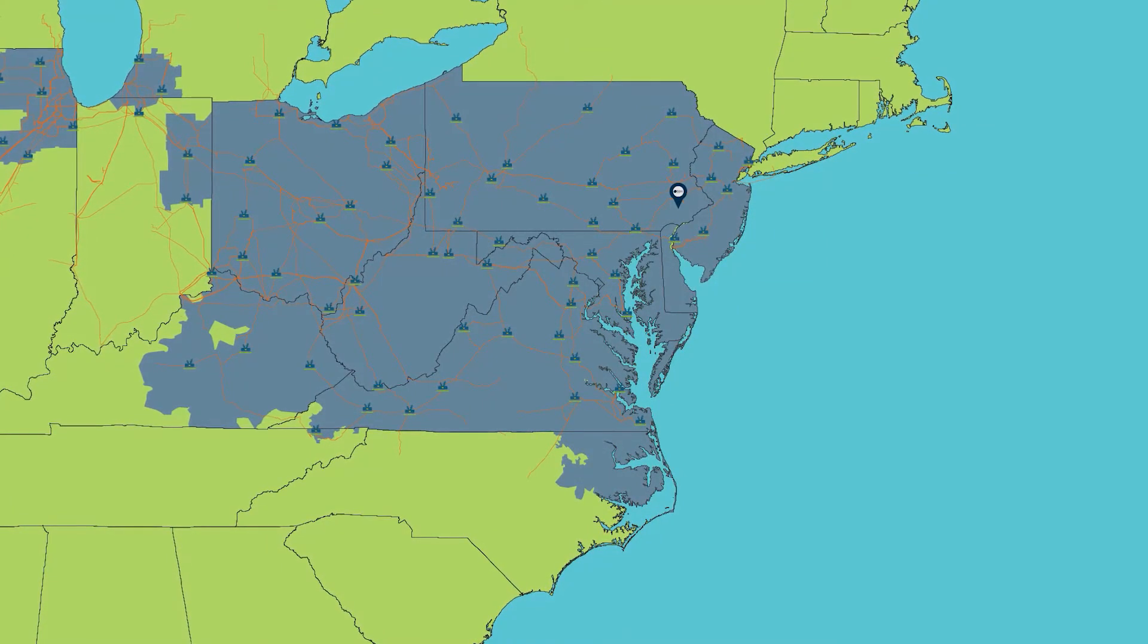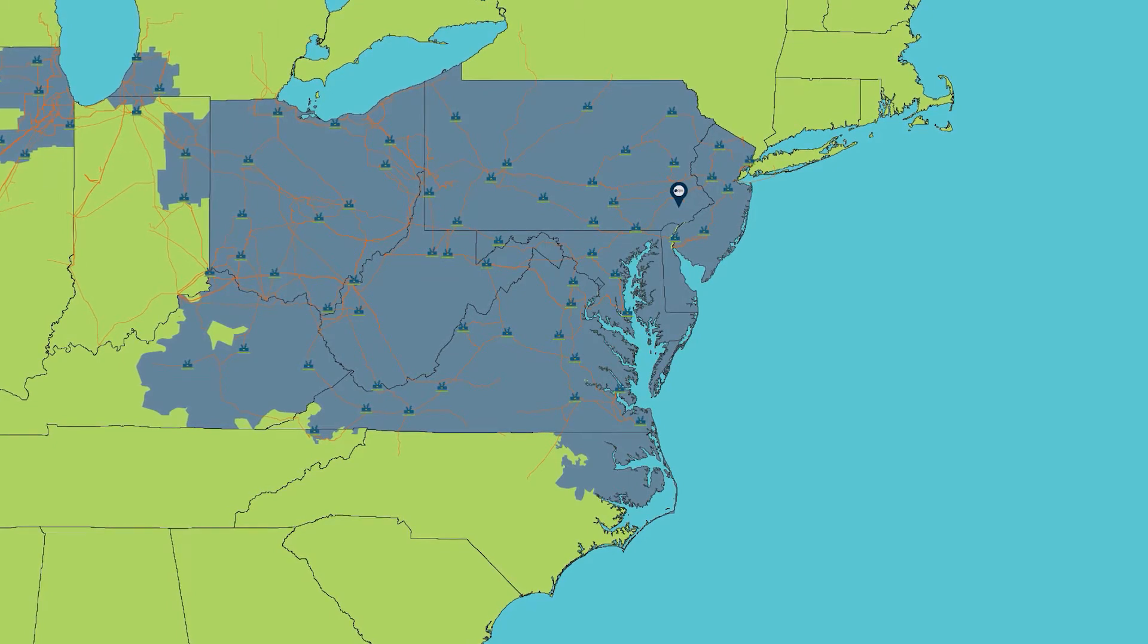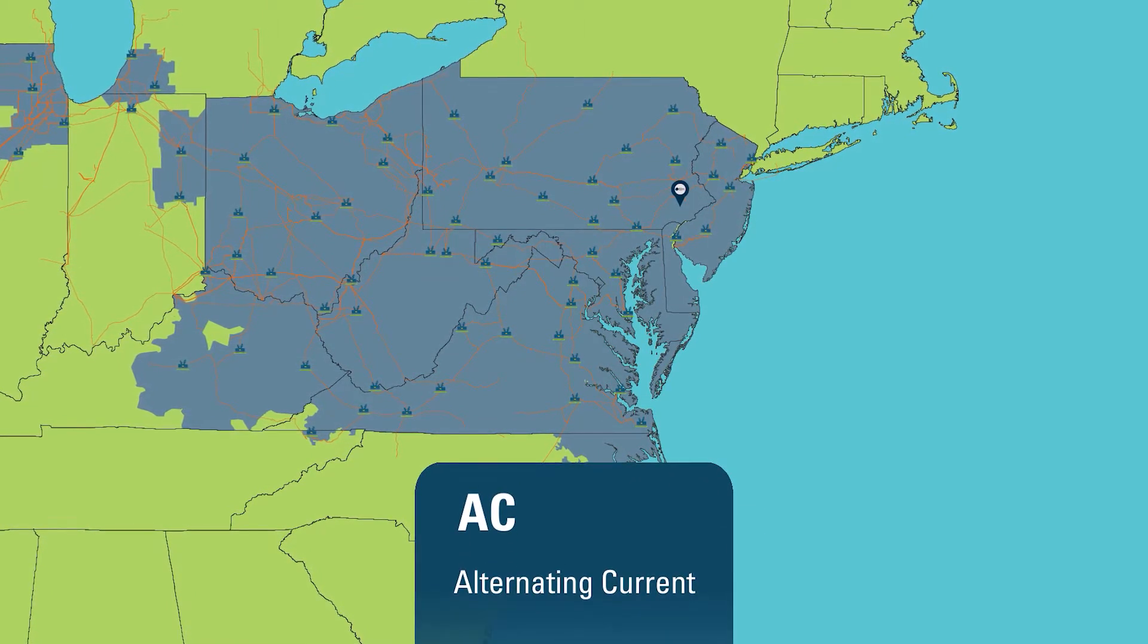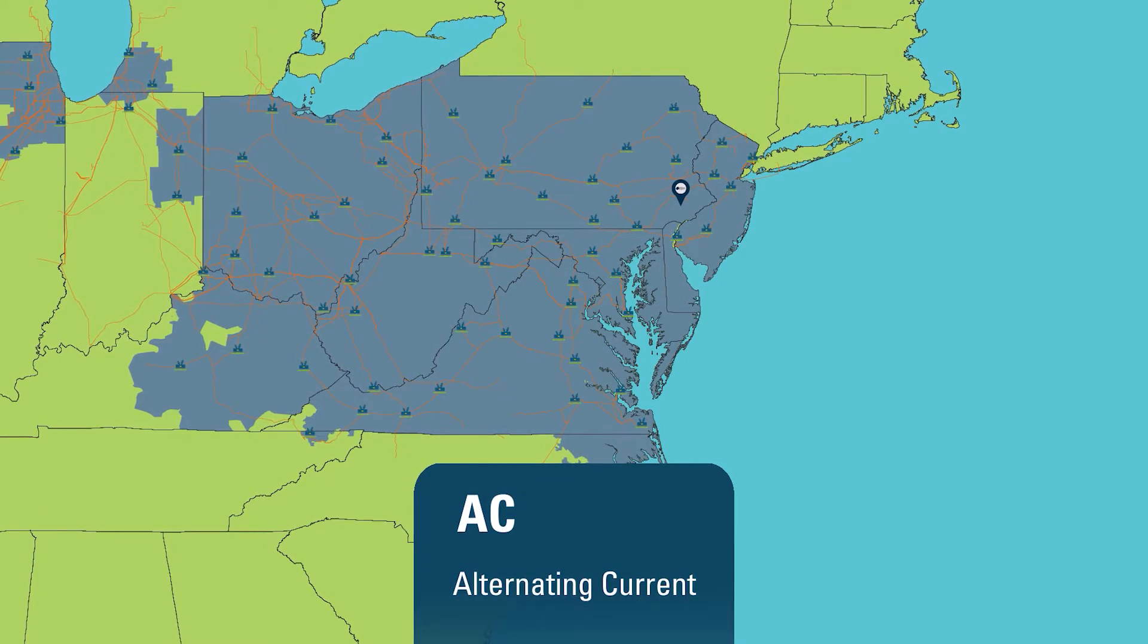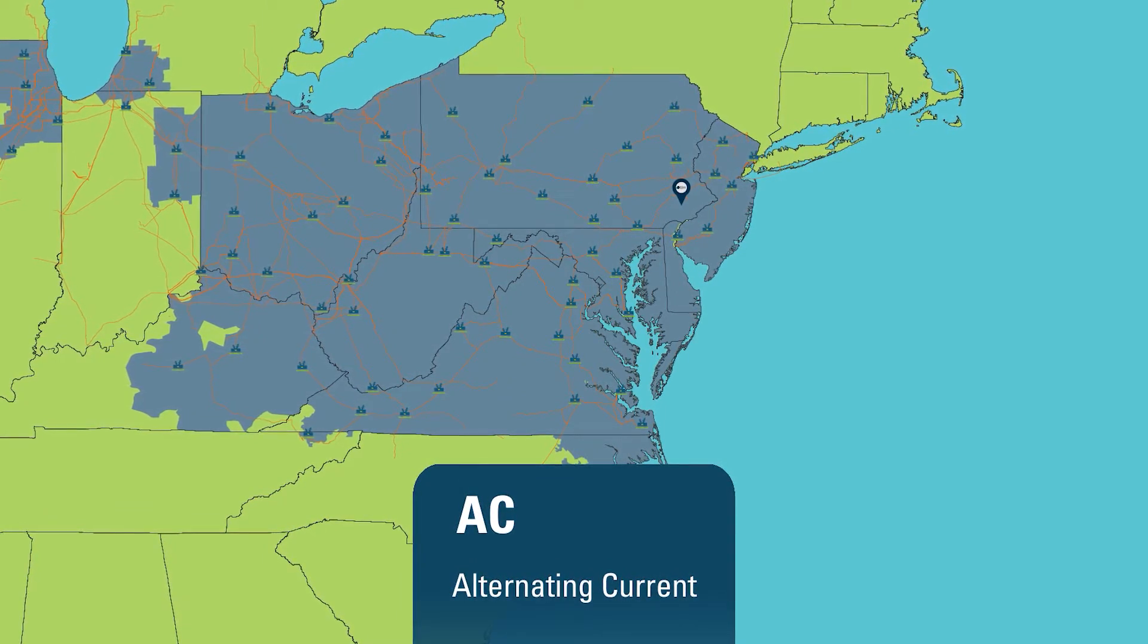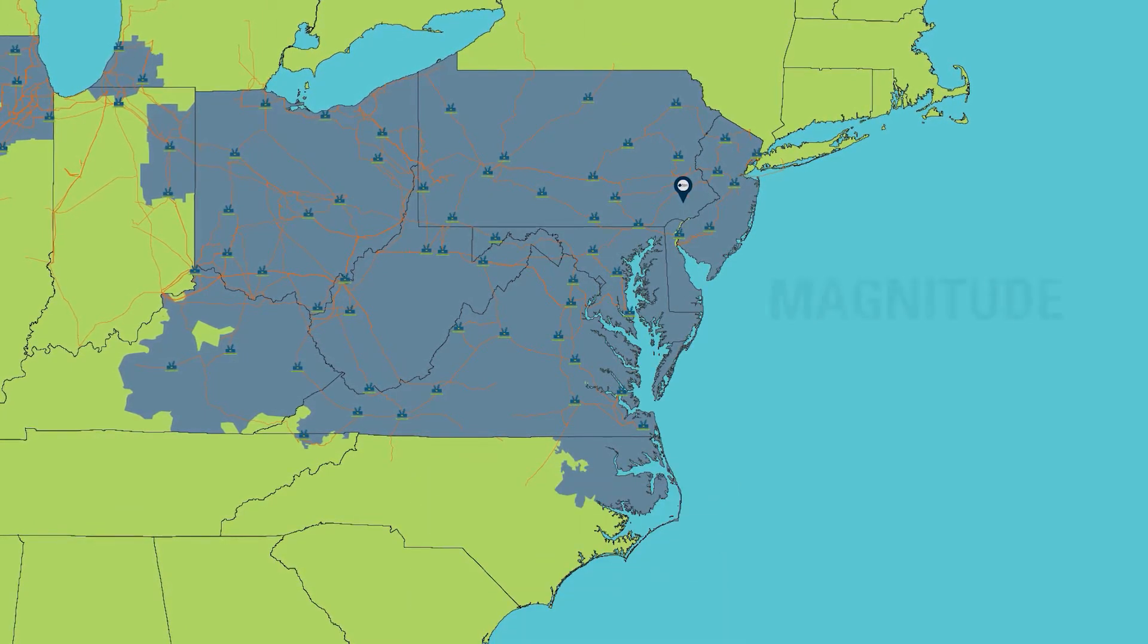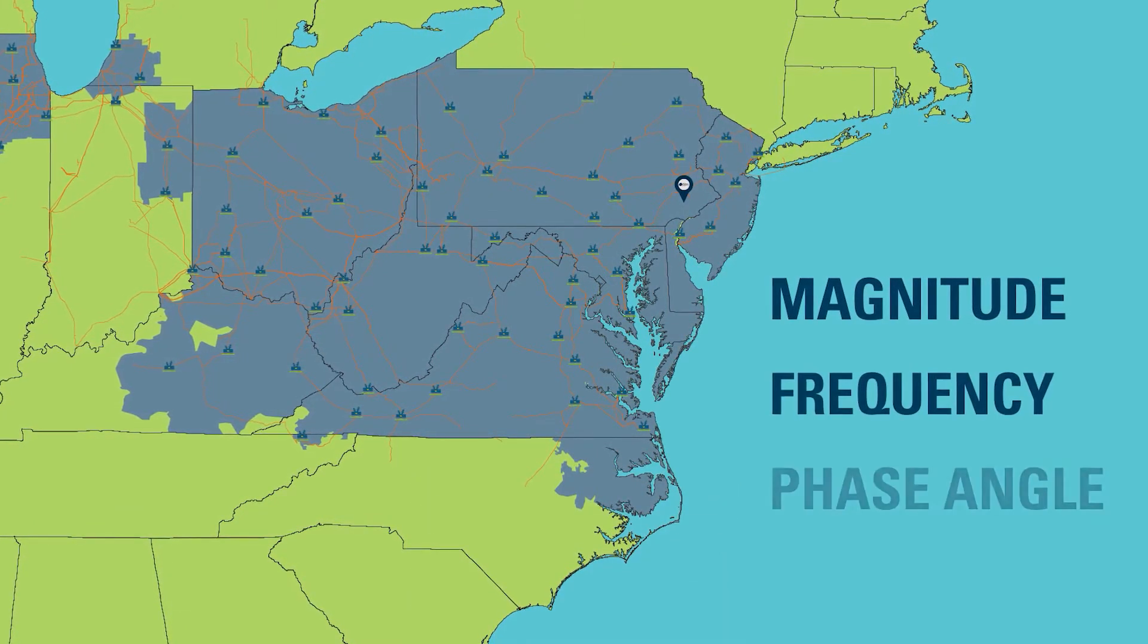To understand how these devices work, we need to start with a short math and theory lesson. Large power systems operate on AC, or alternating current power. But what does that mean exactly? It means that voltages and currents seen across the electric grid are represented by three mathematical quantities: the magnitude, frequency, and phase angle.